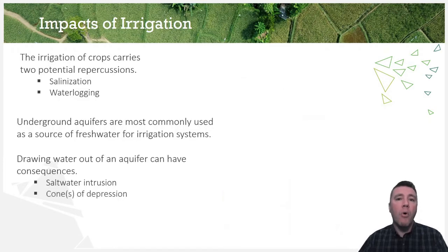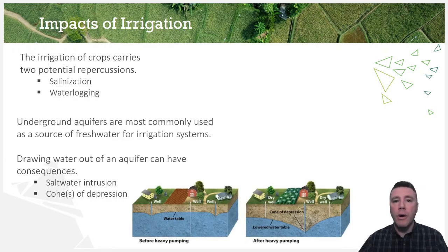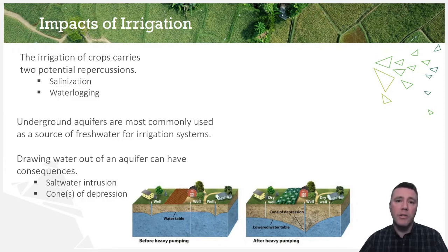When more water is withdrawn from an aquifer than enters it, the water table drops farther below the ground surface. Some shallow wells no longer reach the water table because of the formation of a cone of depression — essentially, pumping water out of a deep well can cause adjacent, shallower wells to run dry.